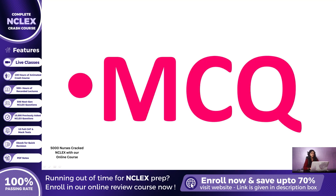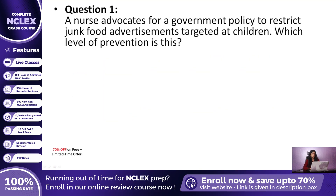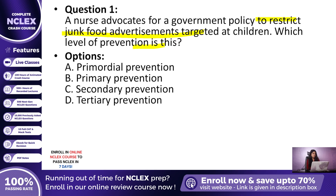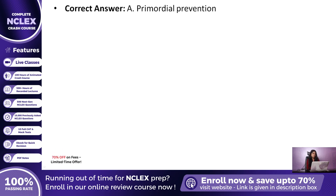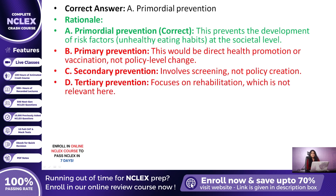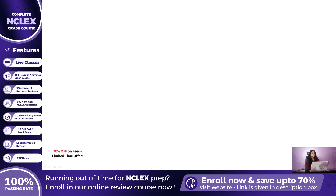Question 1: A nurse advocates for a government policy that restricts junk food advertisements targeted at children. Which level of prevention does this represent? The correct answer is A — Primordial prevention. Because this is an action at the policy level, aiming to stop unhealthy habits before they even develop. It is not primary prevention because there is no direct health teaching, not secondary because it is not screening, and not tertiary because no disease has yet occurred.